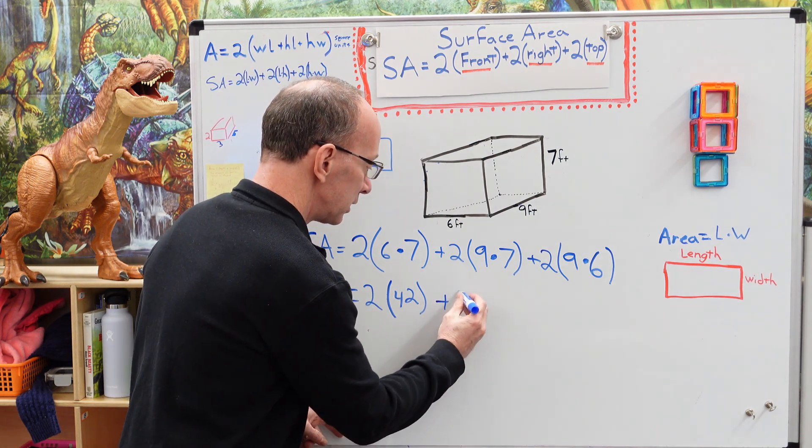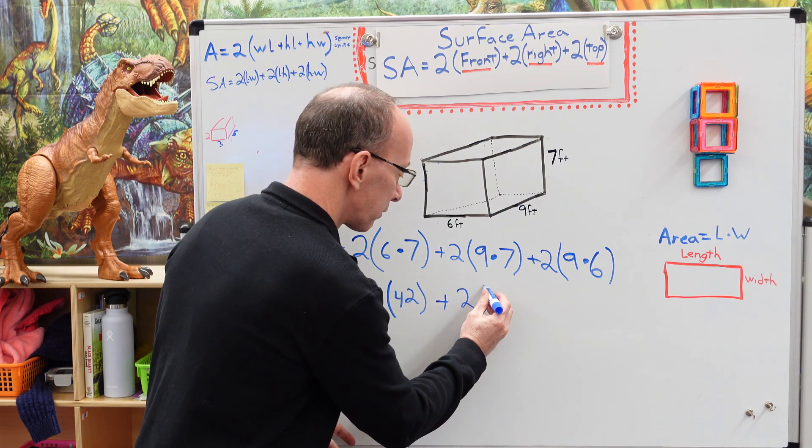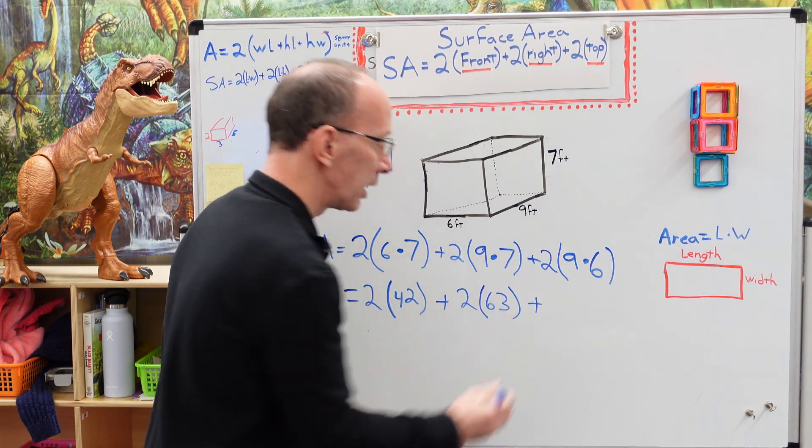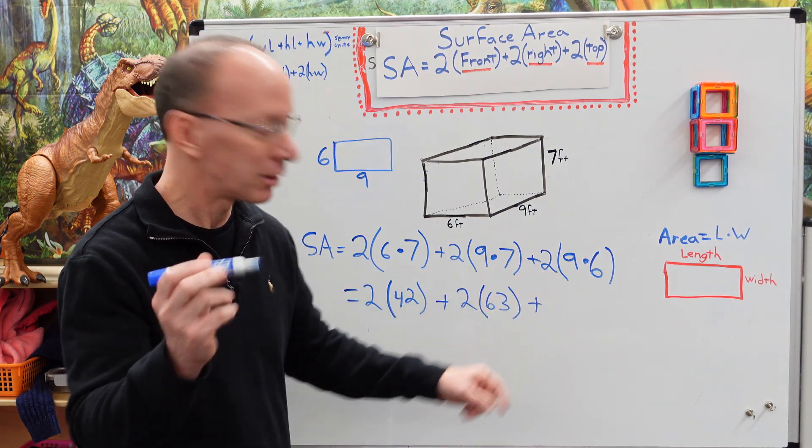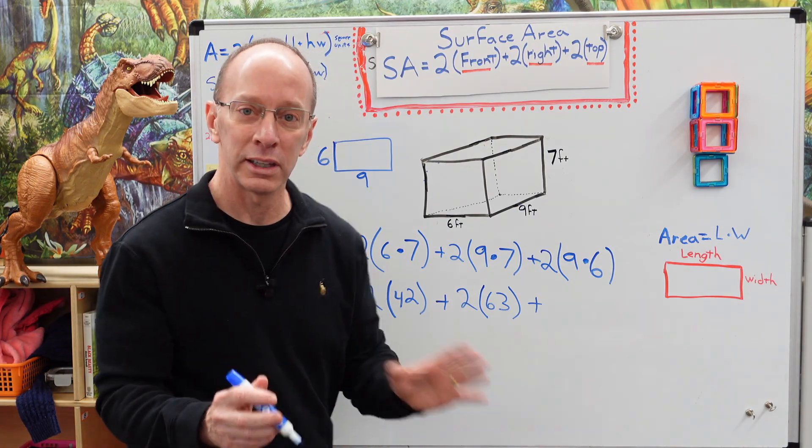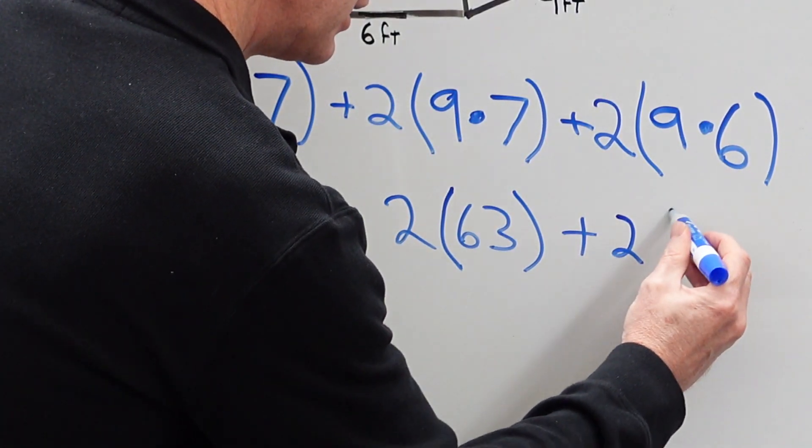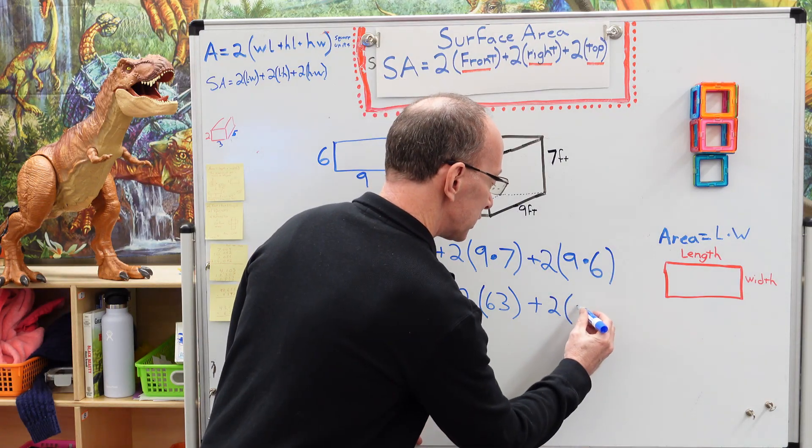Now remember, when you have a number next to the parentheses, that also means multiplication. I'm going to go plus two, nine times seven, 63. Okay, plus two times nine times six. What is nine times six? 54. Really important that you memorize your multiplication facts because it makes things a lot faster and just makes it overall easy, cheesy, lemon squeezy. All right, nine times six is 54.